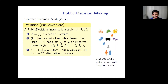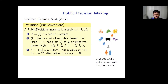One final related model I want to introduce is public decision making, introduced by Conitzer, Freeman, and Shah. An instance consists of n agents faced with m public issues. Each issue has a few alternatives, and agents must collectively decide on an alternative for each issue. Valuation functions are additive and specified by vi(j, l), which denotes the value that agent i has for the l-th alternative of the j-th issue. In the example on the right, two agents Alice and Bob must make two decisions: what to eat and what to watch.